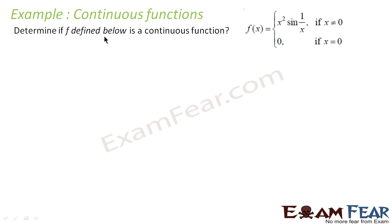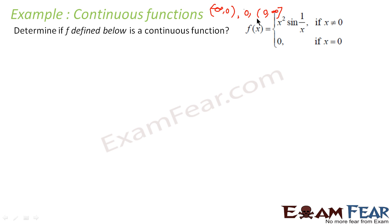Let's take one more example. Here also we have a function and we have to find whether it is continuous or not. We can see that at x equal to 0, this function is changing. So the buckets I have to create are: minus infinity to 0 (0 not included), 0 as a separate bucket, and 0 to infinity (0 not included). Three buckets.